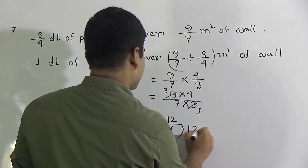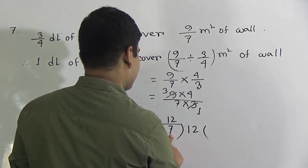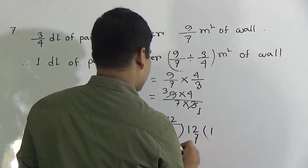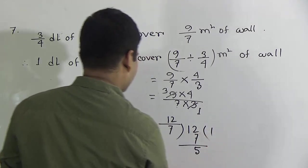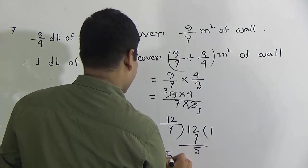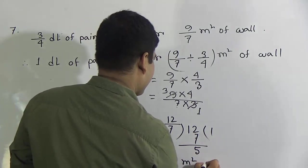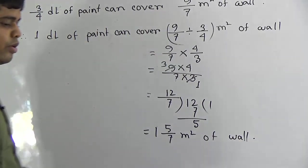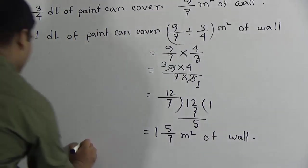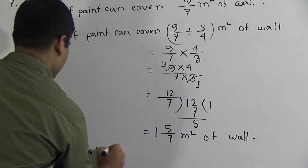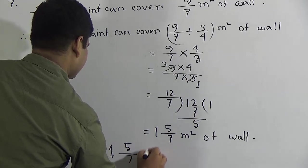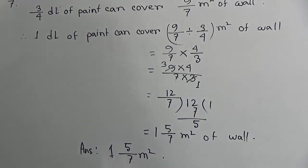We divide 12 by 7: 7 goes into 12 one time (7 × 1 = 7). Subtracting: 12 − 7 = 5. So the answer is 1 and 5/7 square meters of wall. This is the answer. I hope you have understood. As the solution is done, you must write the answer. Question number 7 is done.